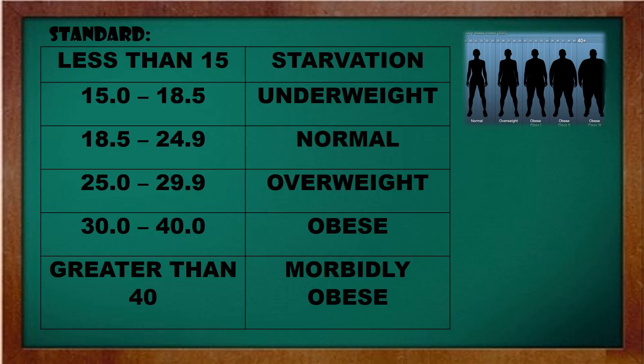Here are the BMI standards: less than 15 is starvation; 15.0 to 18.5 is underweight; 18.5 to 24.9 is normal; 25.0 to 29.9 is overweight; 30.0 to 40.0 is obese; and greater than 40.0 is morbidly obese. That is the standard classification for BMI.